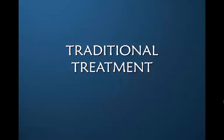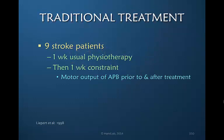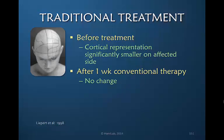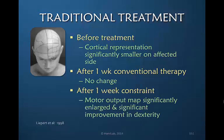Let's think about traditional treatment and how we would approach a stiff hand. Passive range of motion has been discussed as a short-lived response. In a study of stroke patients, nine patients underwent one week of usual physiotherapy followed by one week of constraint therapy. Researchers looked at the motor output of the abductor pollicis brevis before and after constraint therapy. Before treatment, the cortical representation was significantly smaller on the affected side. After one week of conventional therapy there was absolutely no change, but after one week of constraint therapy the motor output of this muscle had significantly enlarged and there was a correlated improvement in dexterity, proving that constraint-induced therapy was more effective.